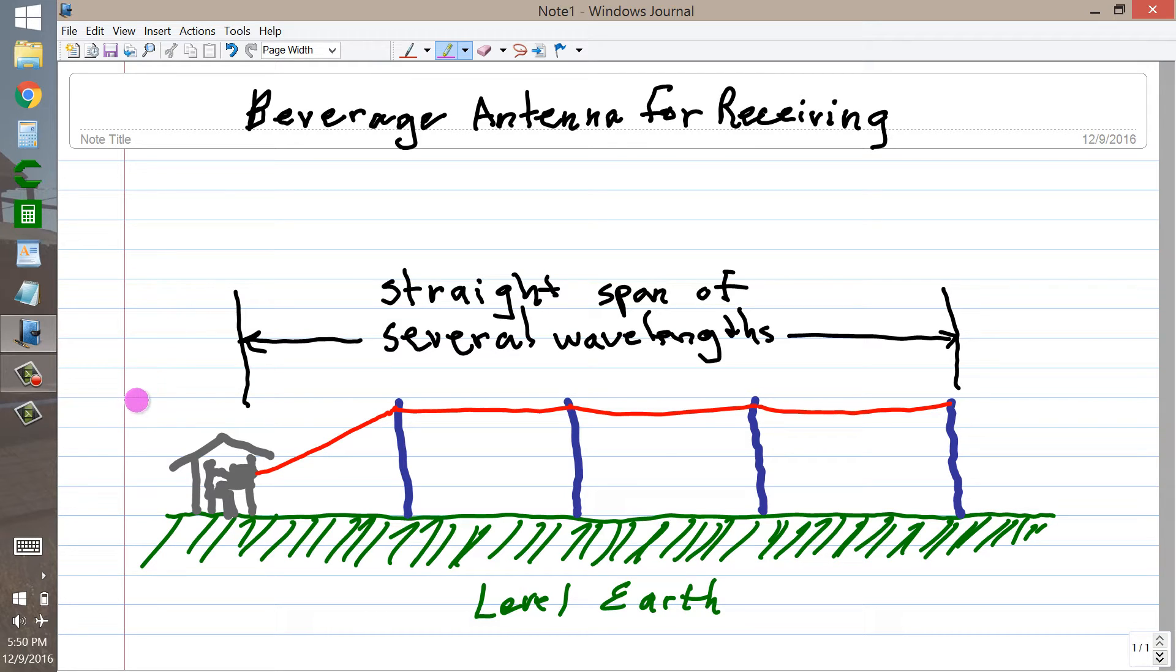Signals coming from either right along the wire in this direction or right along the wire in this direction at a low angle to the horizon are received best, so it is a directional antenna. The favored directions are more or less in the direction the wire runs and contrary to the direction that the wire runs. It's bi-directional.